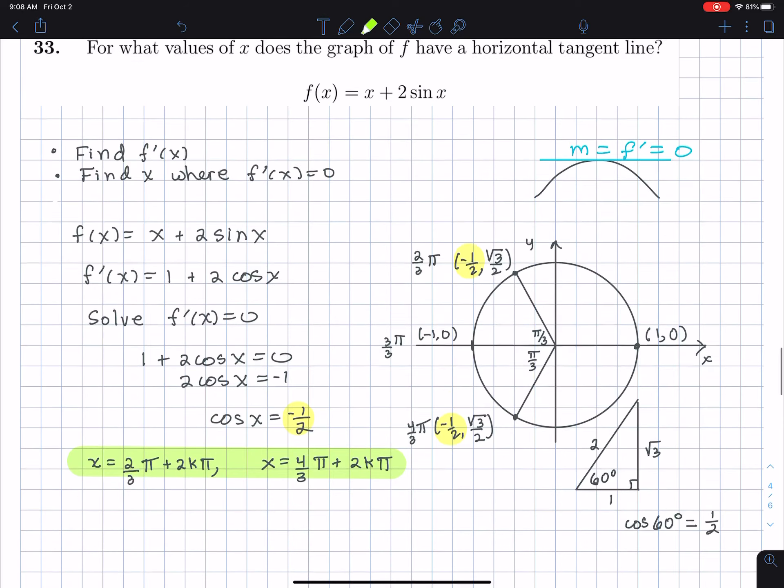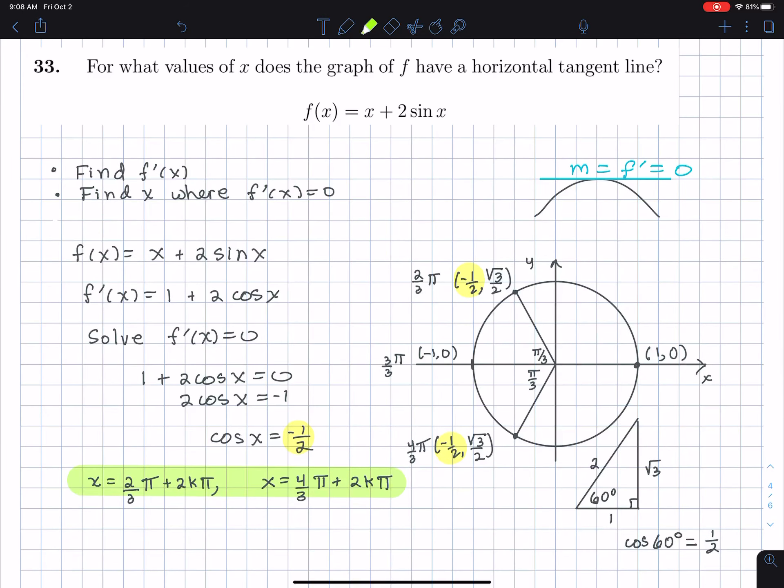So what did I do? I spent time solving cos(x) = -1/2. The main idea is: given the function, find when the tangent line is horizontal by taking the derivative and setting it equal to zero. This gave us 1 + 2cos(x) = 0, or cos(x) = -1/2. Then I solved cos(x) = -1/2.